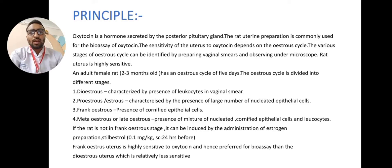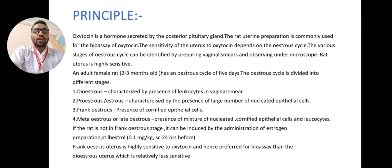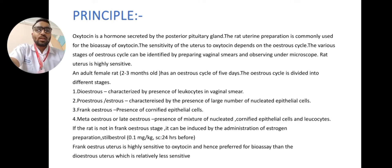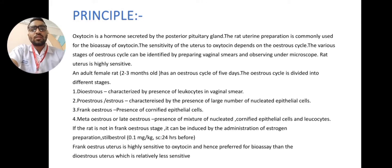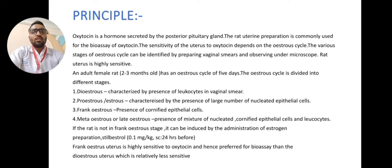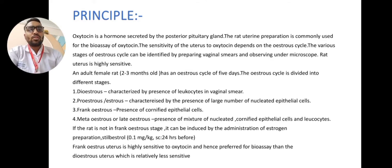The rat uterus is highly sensitive. An adult female rat of 2–3 months old has an estrous cycle of 5 days. The estrous cycle is divided into different stages. First is diestrus, characterized by the presence of leukocytes in the vaginal smear. Second is proestrus or estrus, characterized by the presence of a large number of nucleated epithelial cells. Third is frank estrus, characterized by the presence of cornified epithelial cells. Fourth is metaestrus or late estrus, characterized by a mixture of nucleated, cornified epithelial cells and leukocytes.